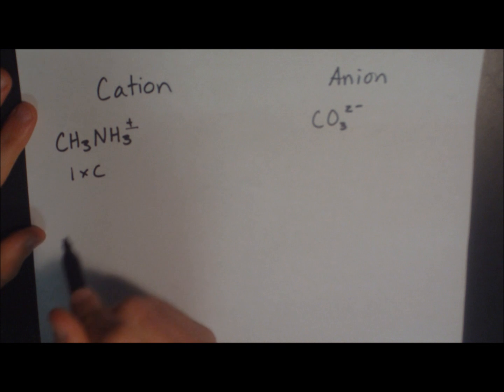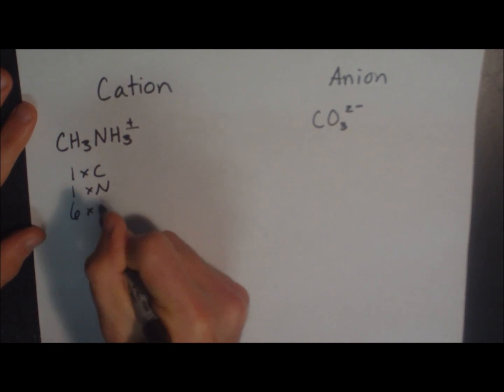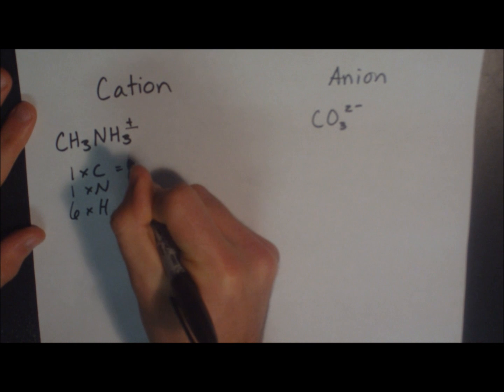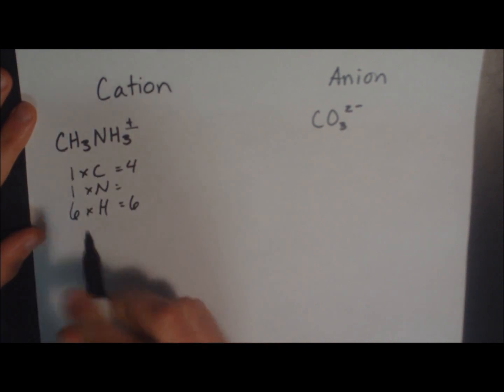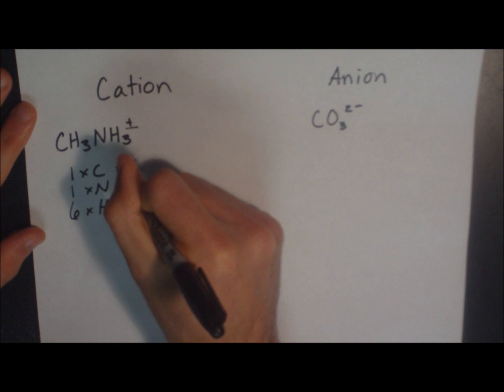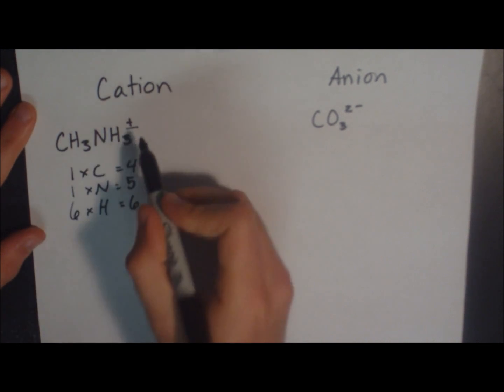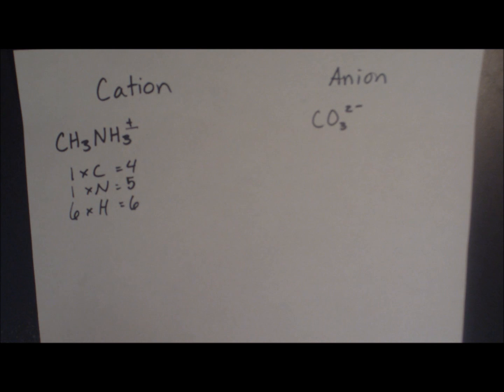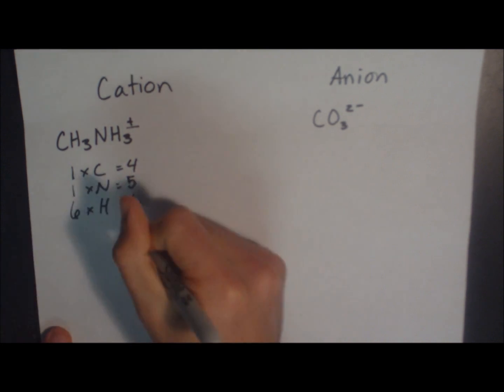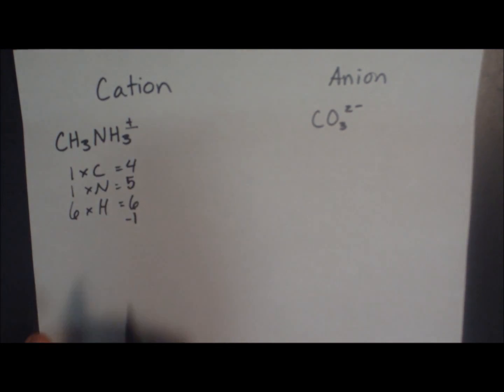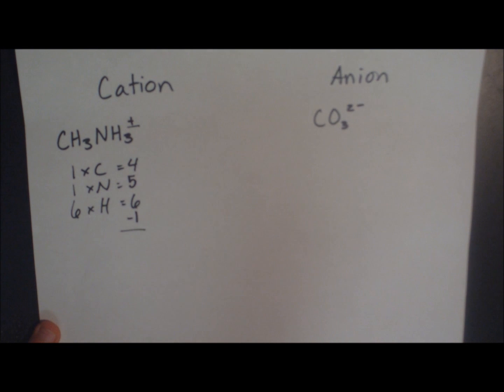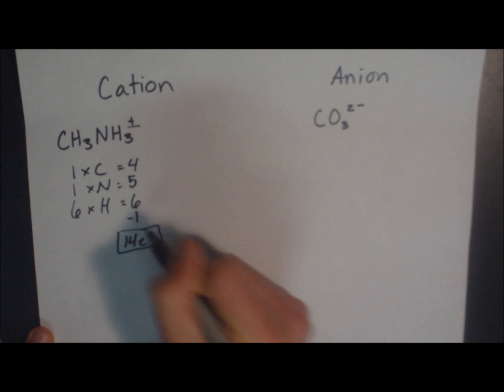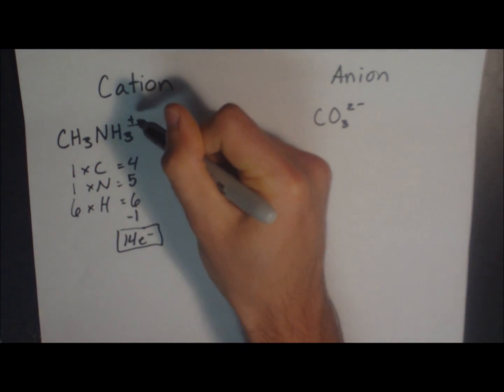We only have one carbon, we have one nitrogen, we have six hydrogens. Nitrogen is a group 5 element, meaning it should have 5 electrons. And the positive charge means we're missing one electron, so minus 1. So totaling up, we're only going to have 14 electrons to use. It should be 15 if that positive charge wasn't there, but that means we're missing an electron.